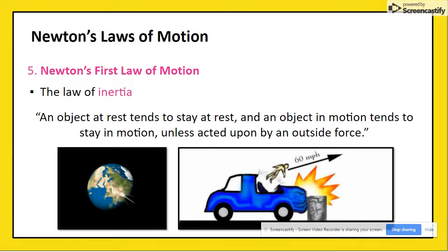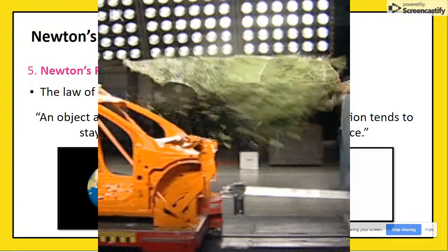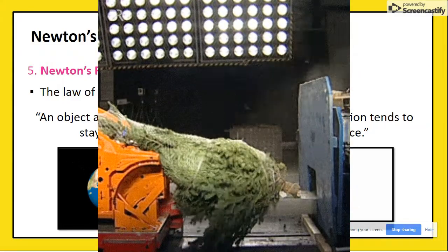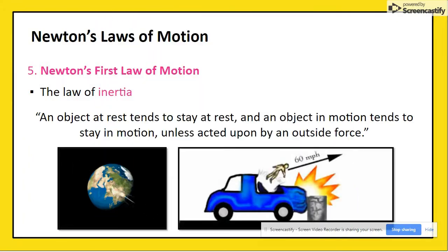Consider a car driving down the road at 60 miles per hour. At that constant speed, the passengers and the car are traveling at the same rate. If an outside force, such as a barrier, causes the car to stop, the passengers will stay in motion unless acted on by an outside force.